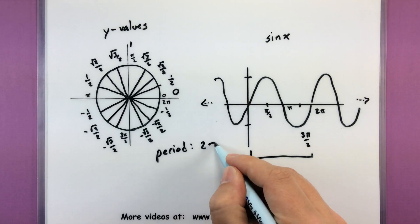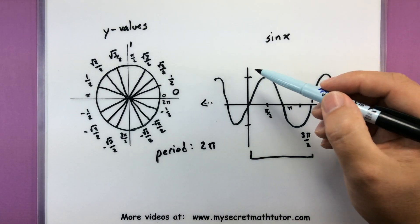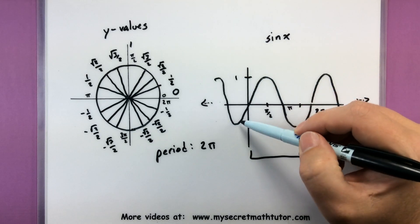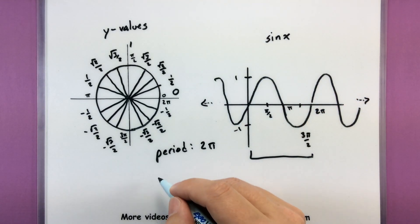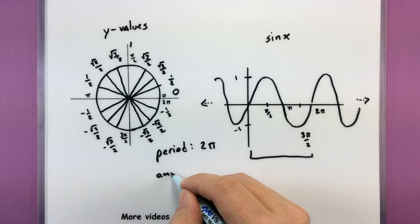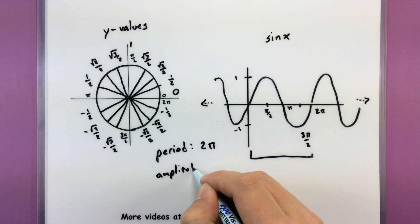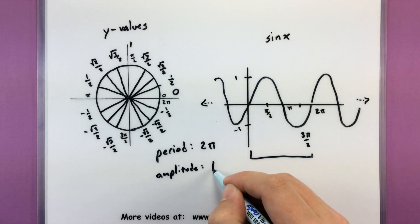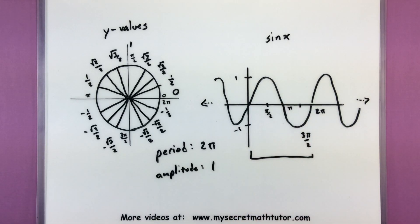And for sine, the period is 2 pi. Also, the maximum and minimum value, the way we keep track of that is we call this the amplitude. So we say that the amplitude is 1 corresponding to that maximum peak.